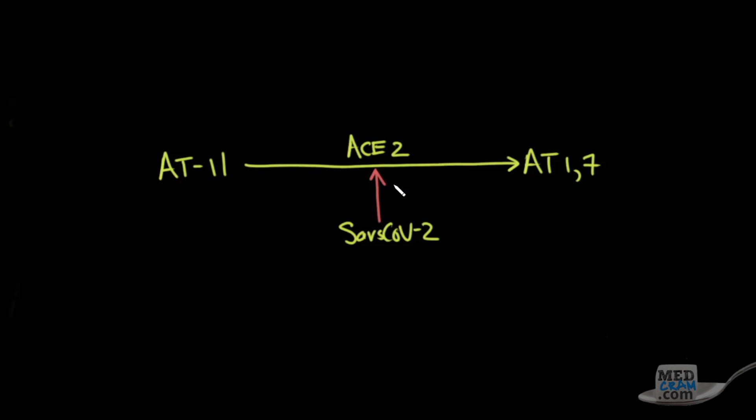Remember what we talked about last time. Angiotensin-2 is converted into angiotensin-1-7 by the enzyme ACE2. The problem is SARS-CoV-2 binds to ACE2 and inhibits it.